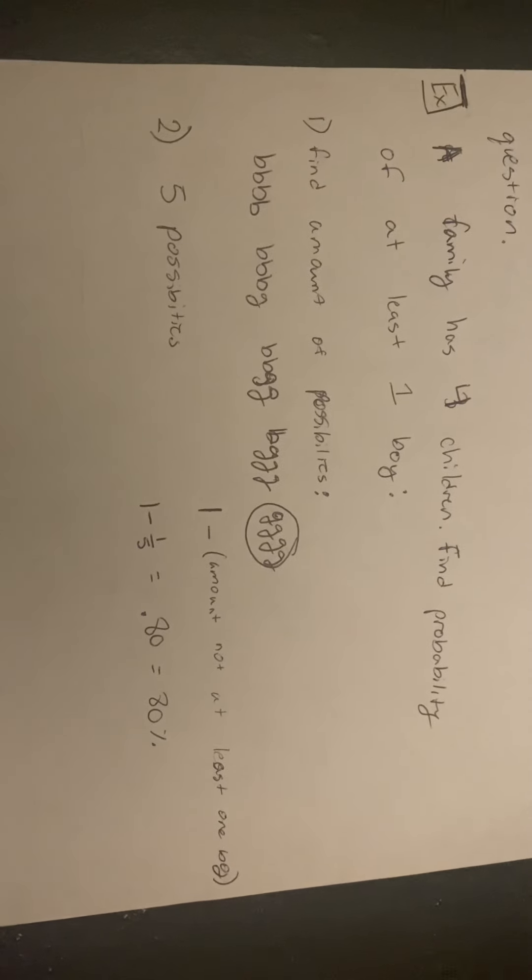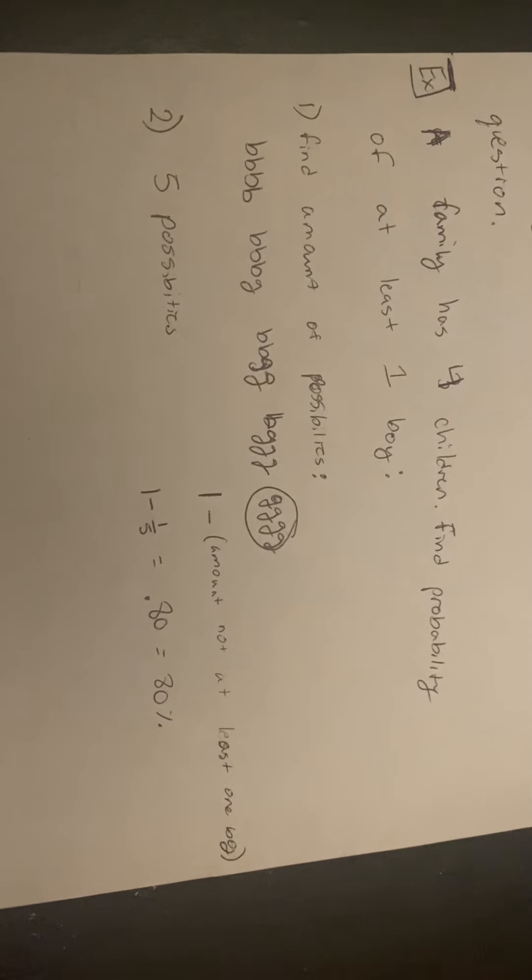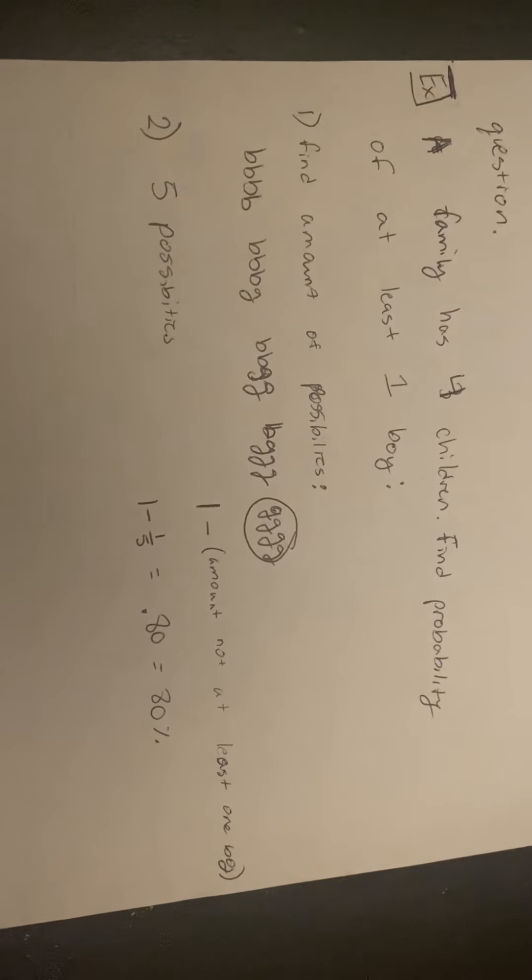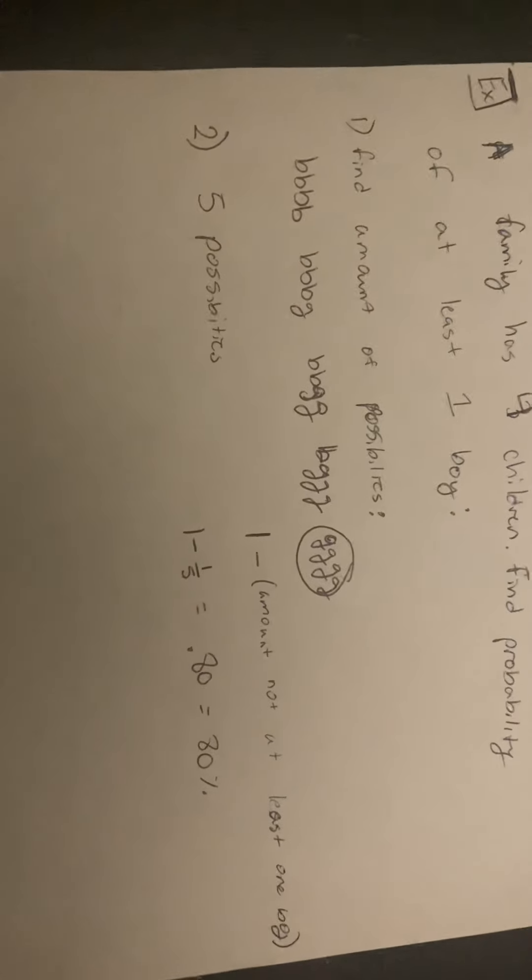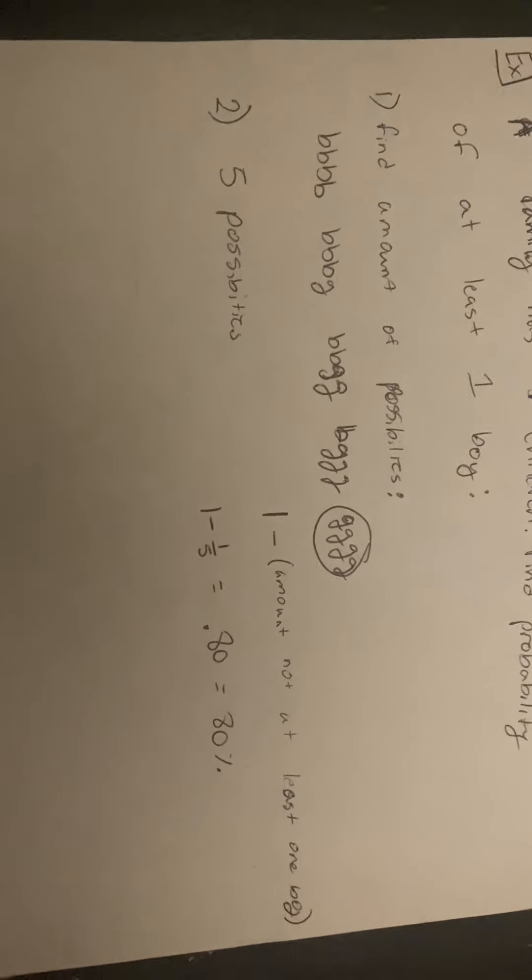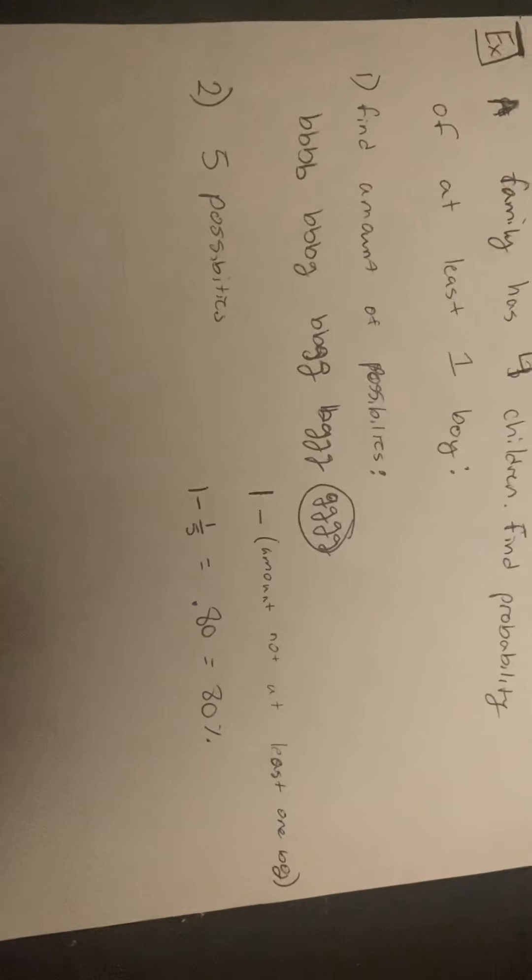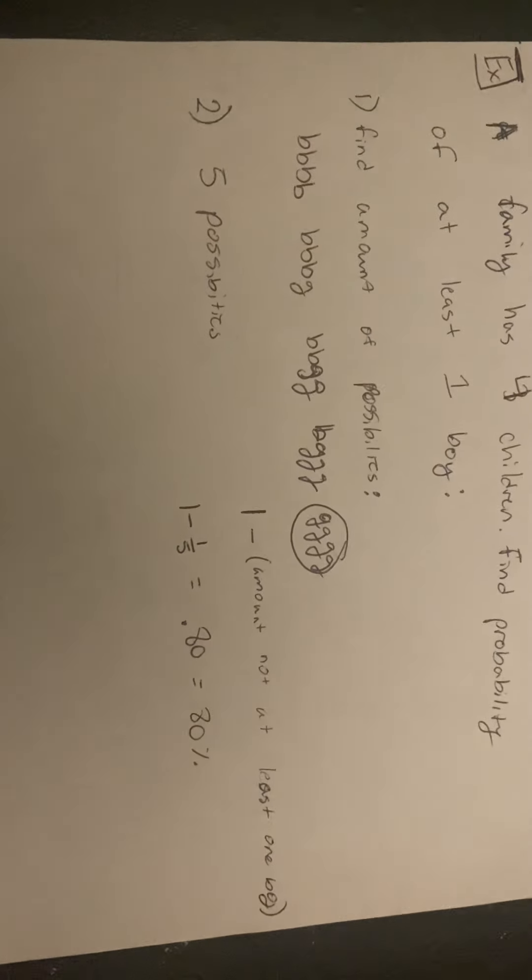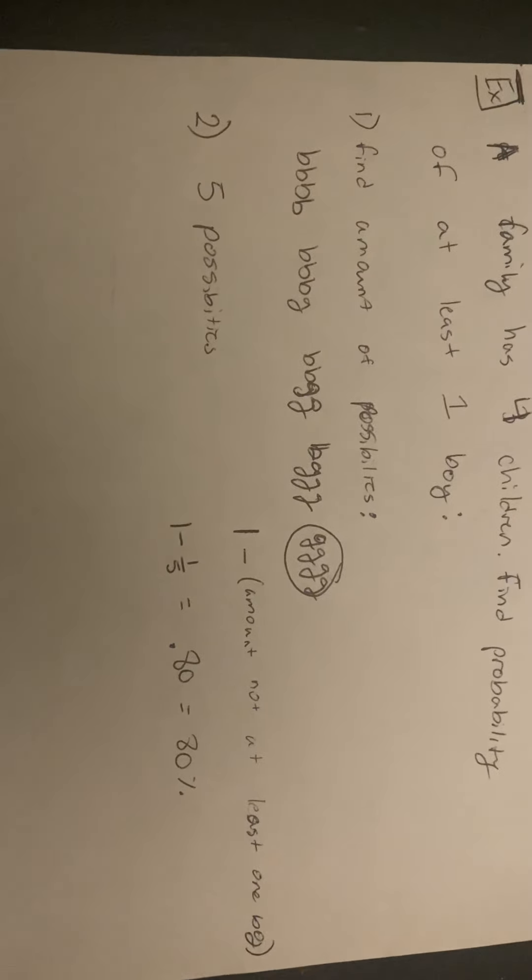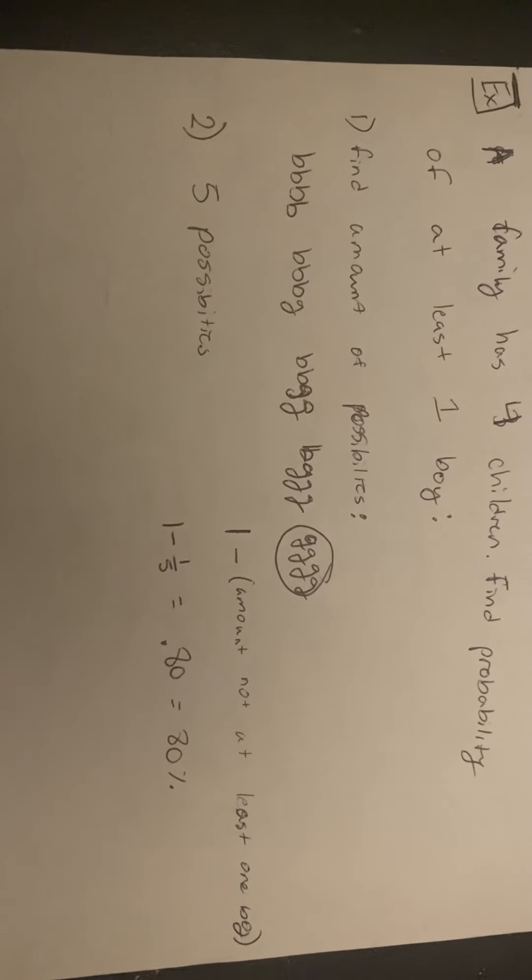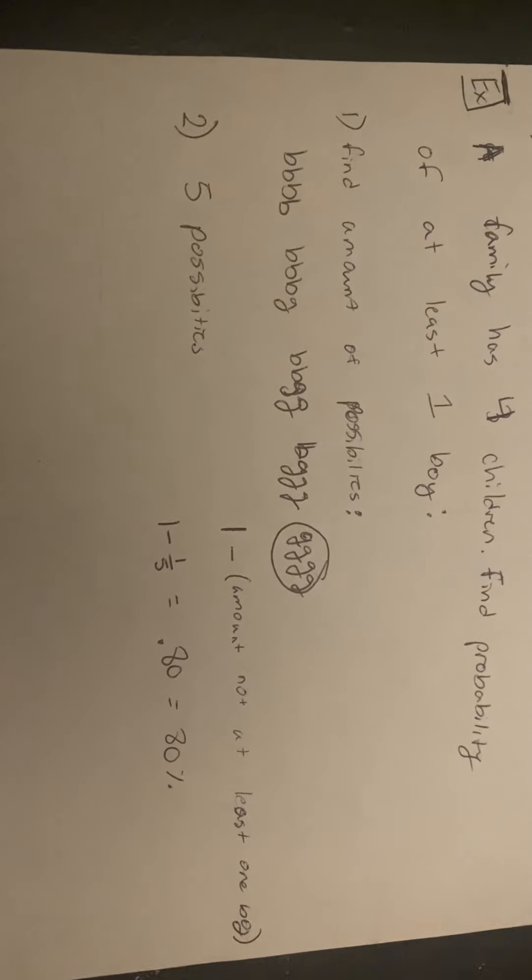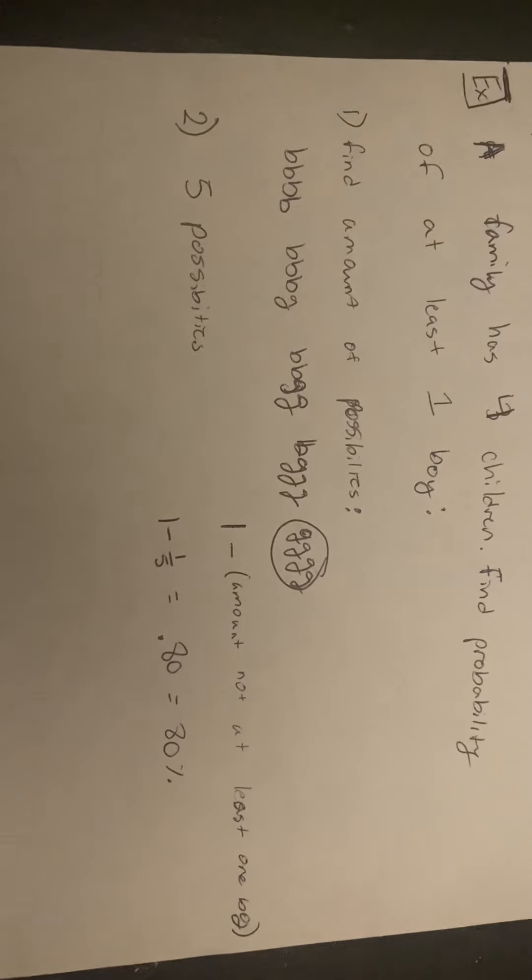The probability that the outcome does not have at least 1 boy is 1 to 5, which is 20%. If we take 100% minus 20%, we get 80%. 80% is the final probability of having at least 1 boy in the family.